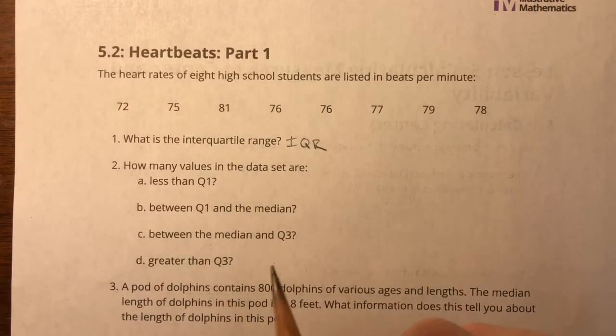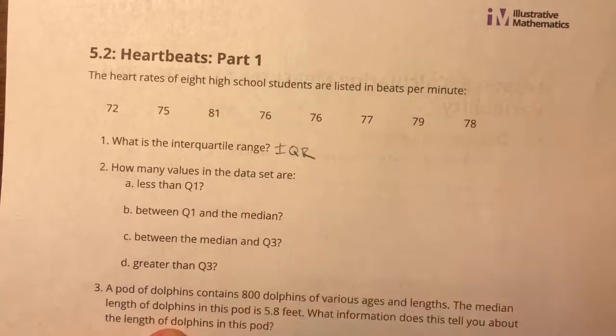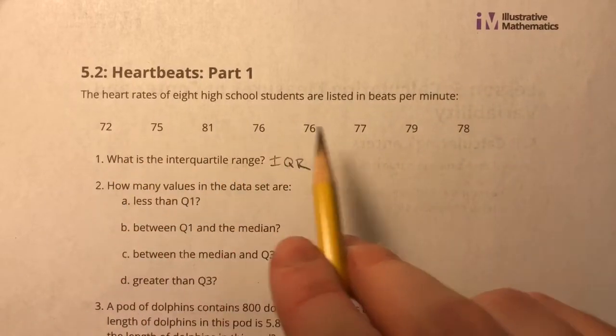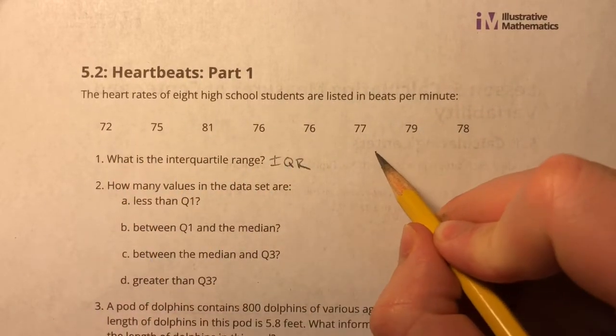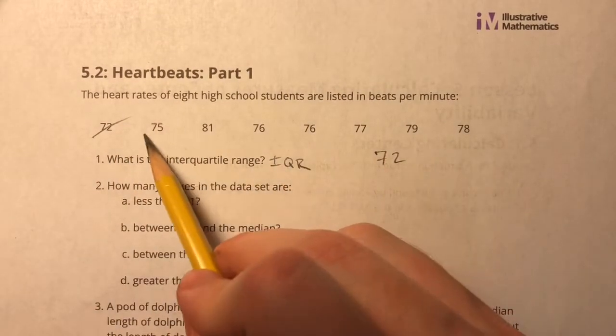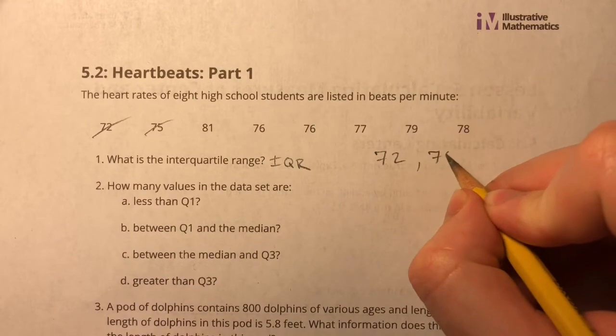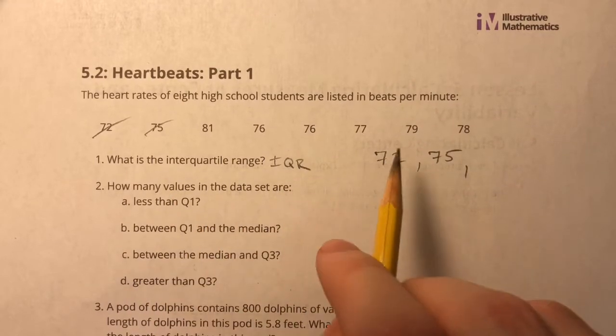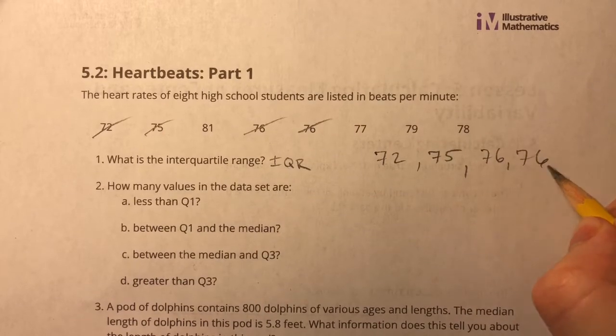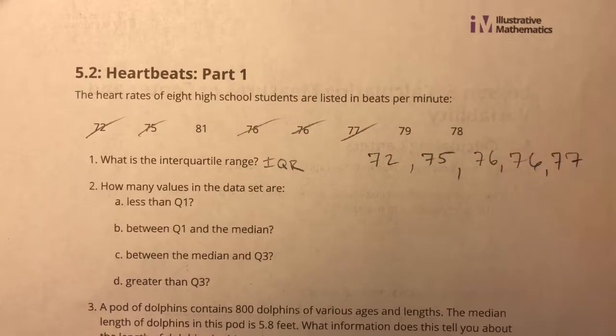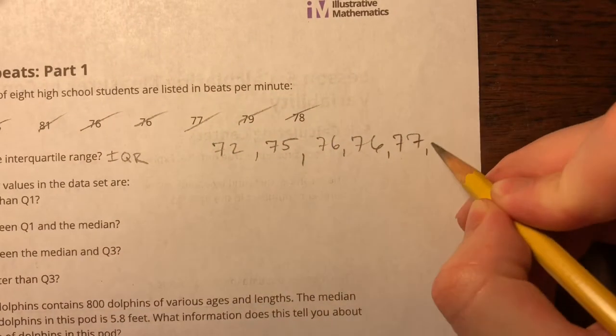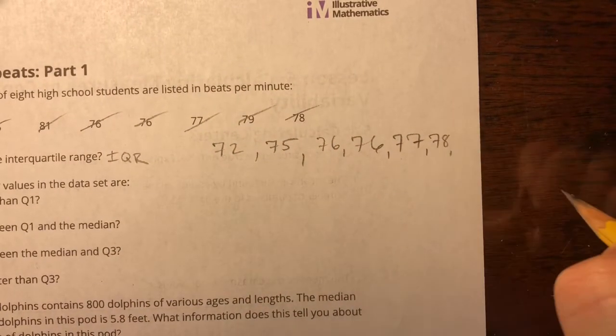So I could plug this into my calculator and get all the five values I need, but since it's such a small data set, why not try and graph it? So first thing I'm going to do is find the smallest value, 72. Find the next smallest value, 75. Next smallest, I see 76 twice, and 77, 78, 79, 81.